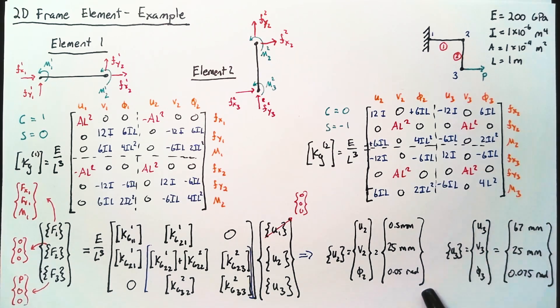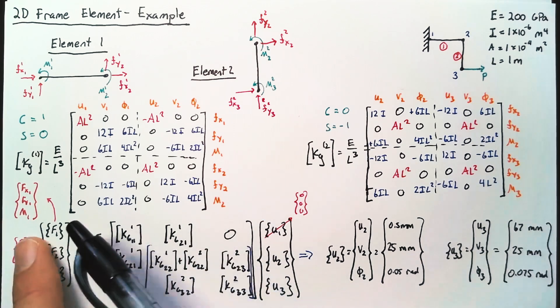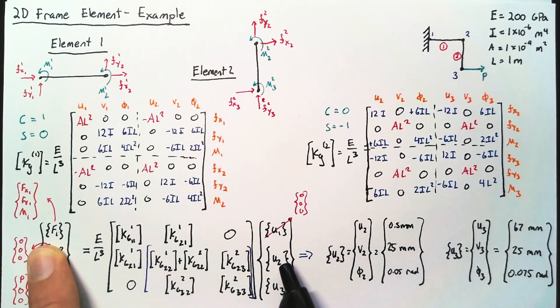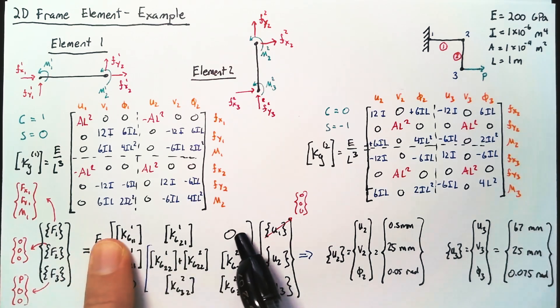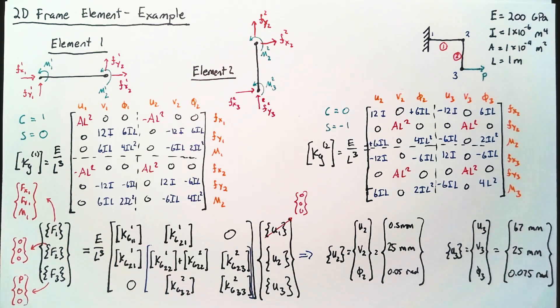With these in hand, we can go back and calculate the reaction forces by multiplying this nine-by-one vector by the top three rows here. But we'll leave that for another time.